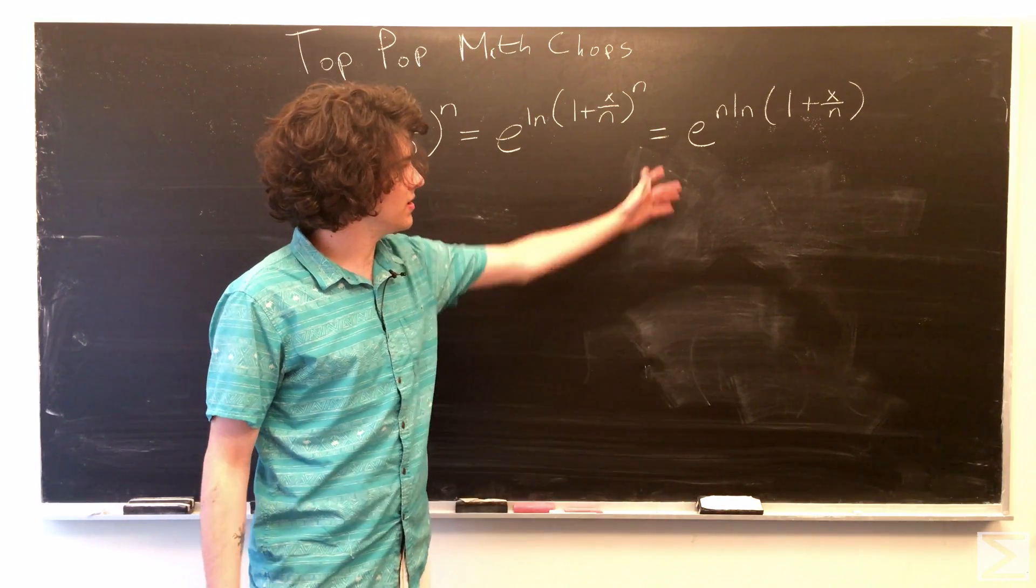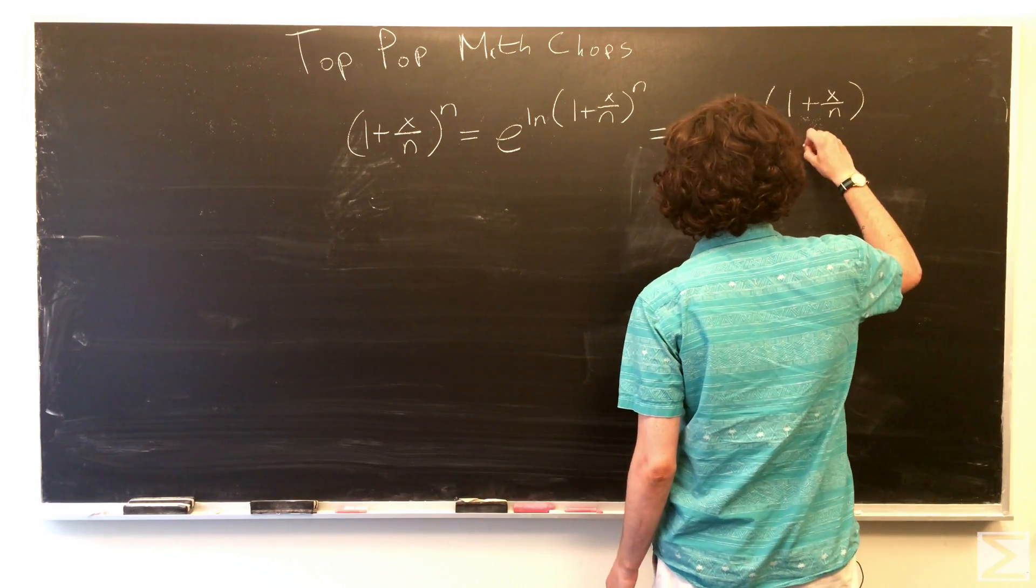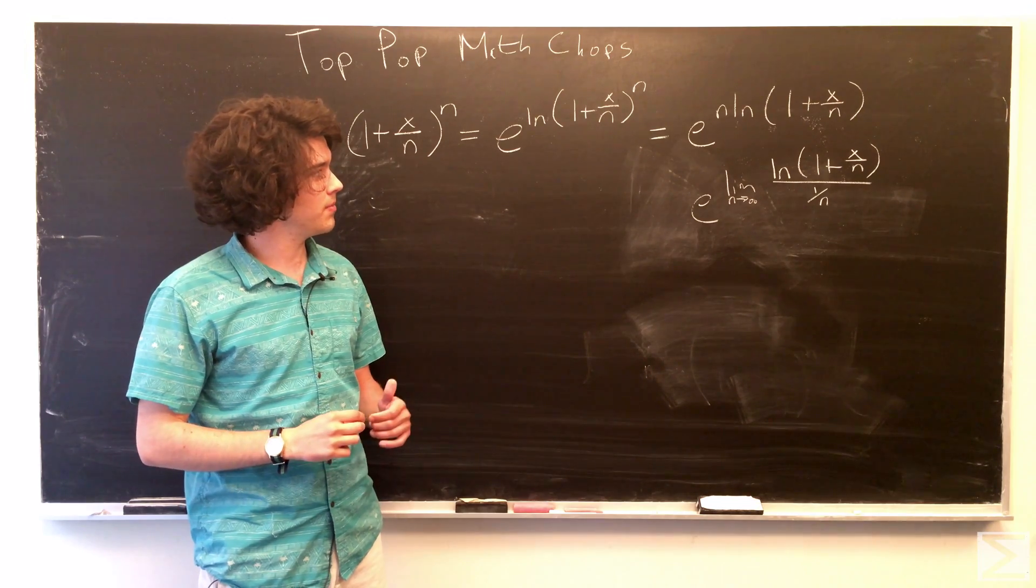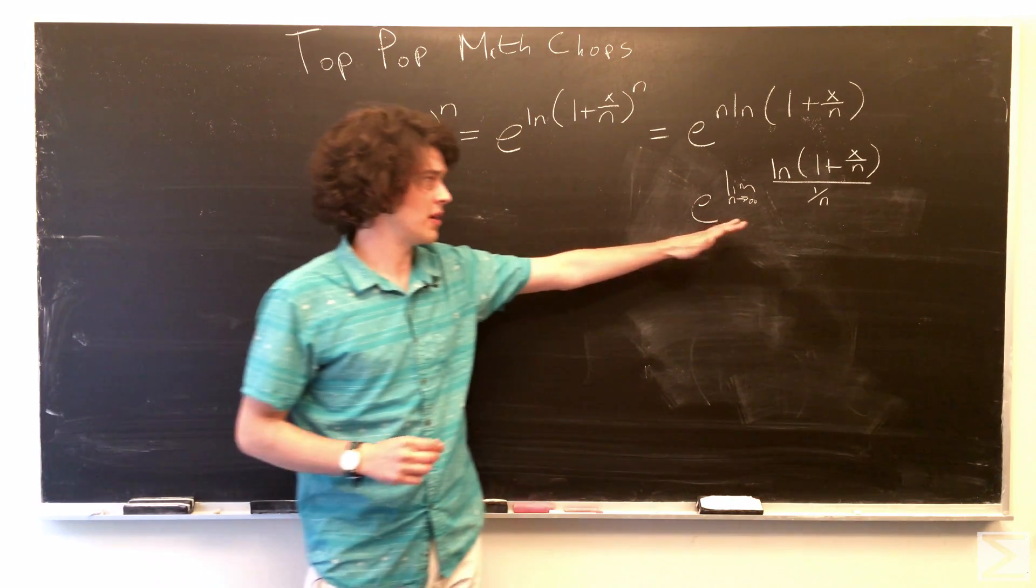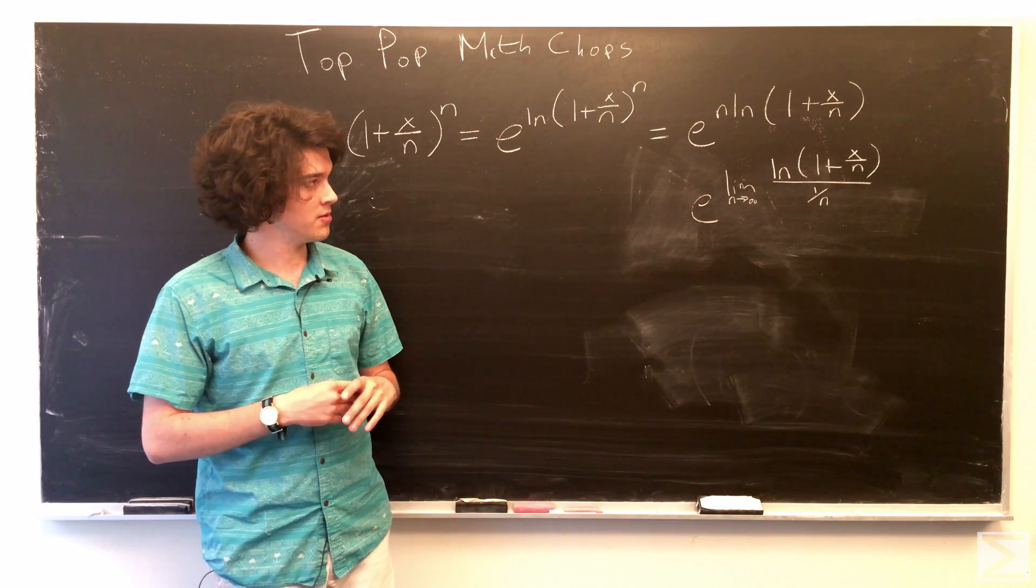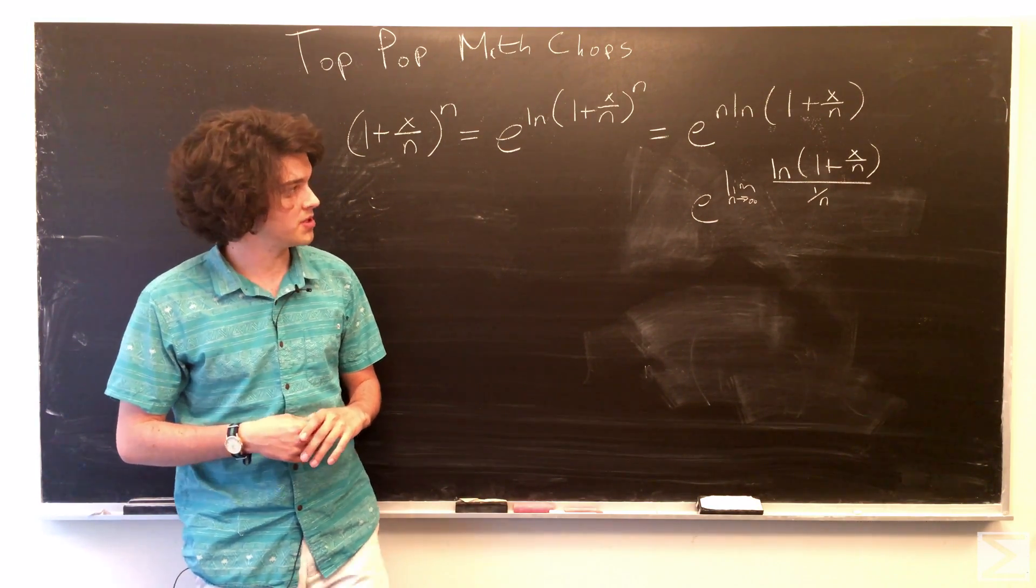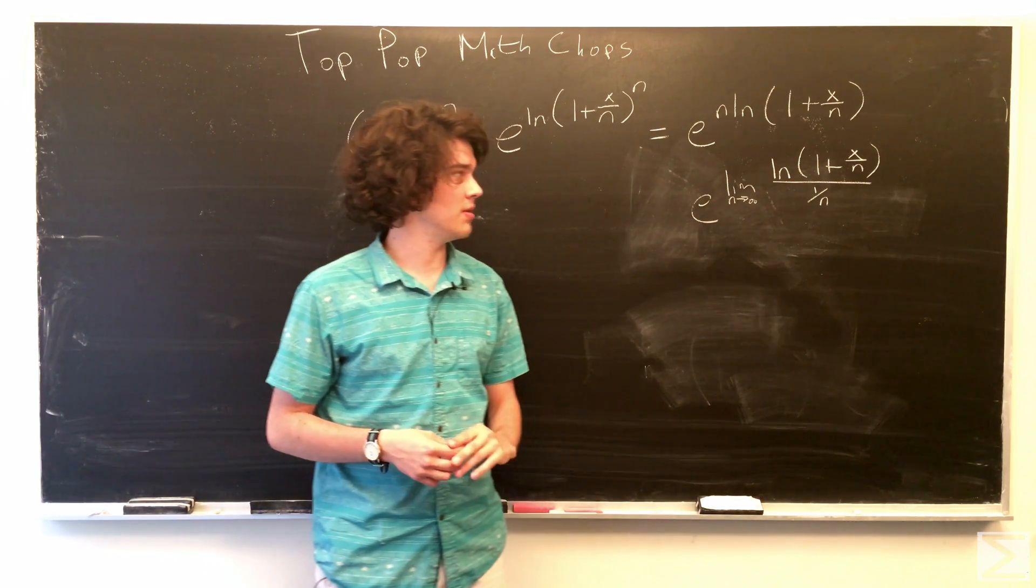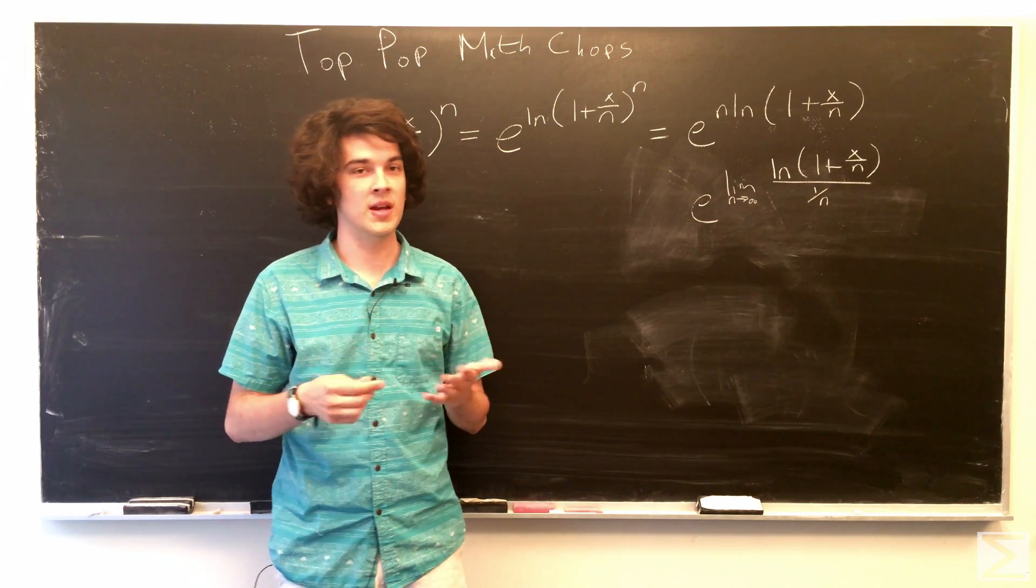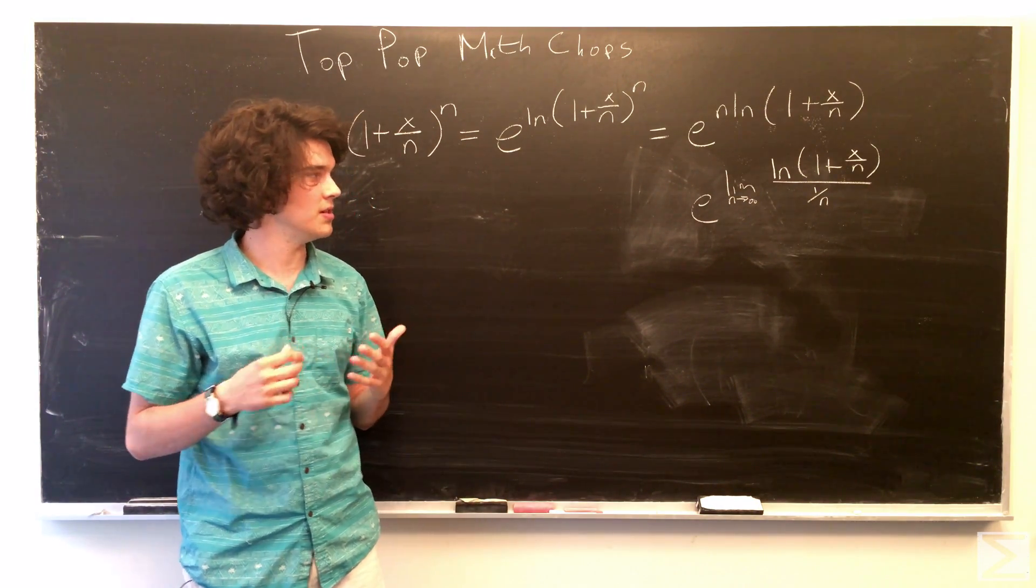But, since e is not dependent on n, we can rewrite it. So, here we still have the same, or we have what we actually want to find. I've just rewritten this as a fraction so that we can use L'Hopital's rule, which tells us that the limit as n approaches infinity of f of x over g of x is going to equal the limit as n approaches infinity of f prime of x over g prime of x.